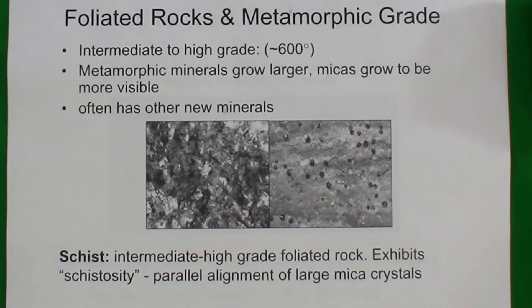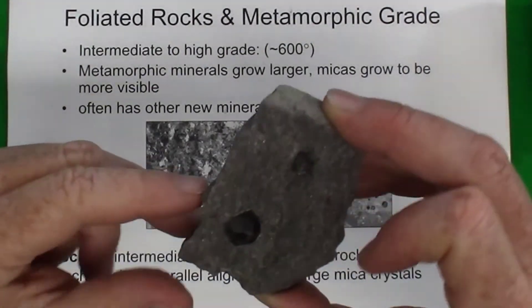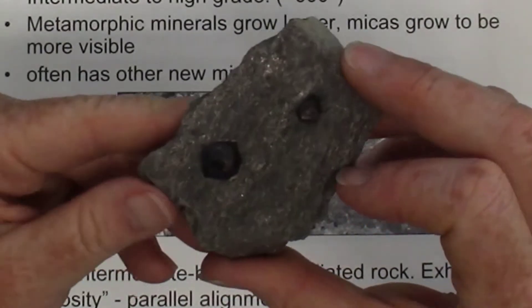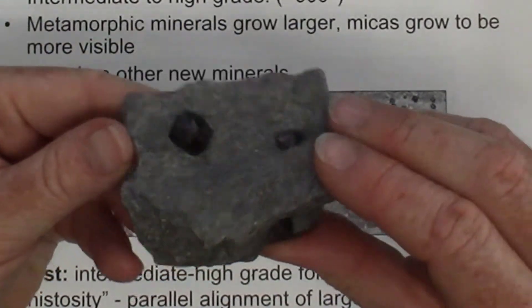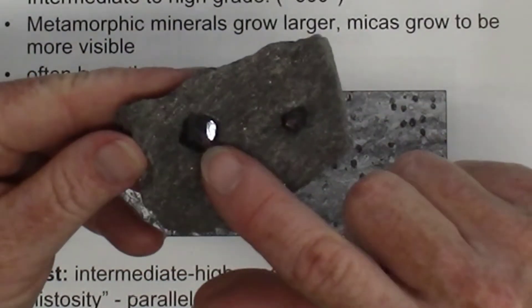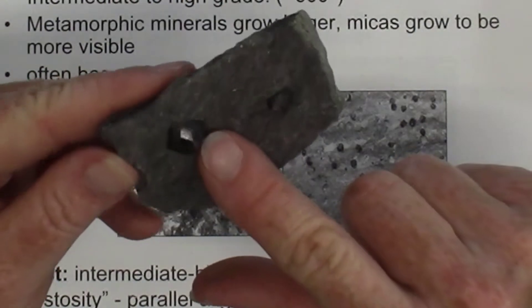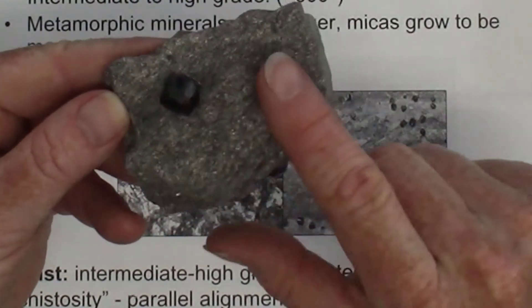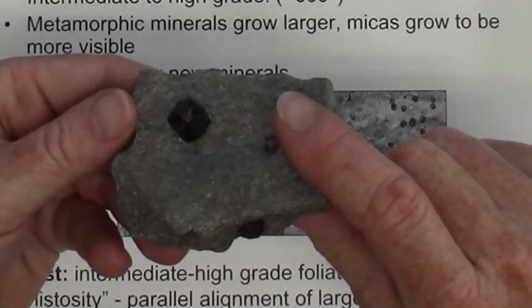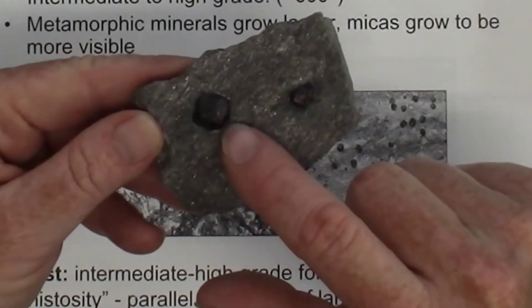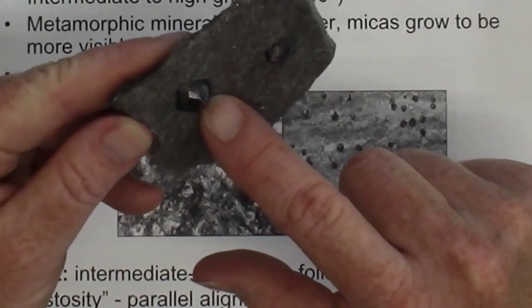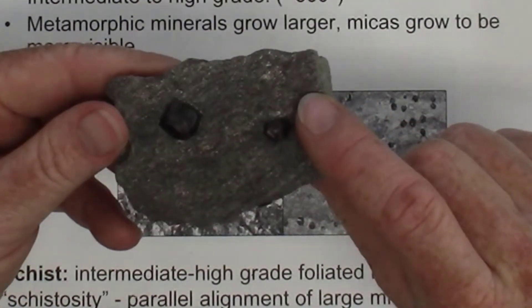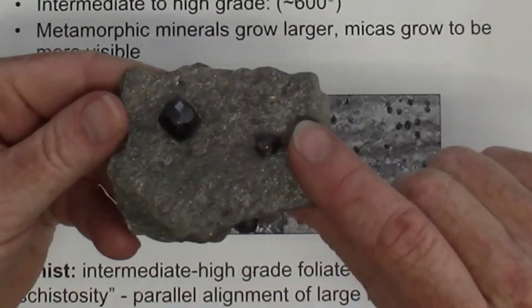Schists can also develop other minerals that are stable under intermediate to high grade metamorphism. For example, in this schist we have some large garnets forming. Garnets are very stable under these conditions, so they do not become elongated — they retain their equigranular shape and just grow larger and larger under higher grades of metamorphism. This is another example of schist.